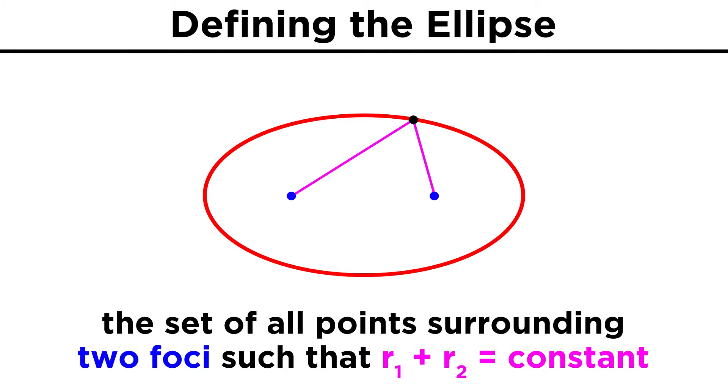No matter what point we are looking at on this ellipse, the sum of these two distances will be the same. As it gets closer to one, it's farther away from the other, and vice versa.